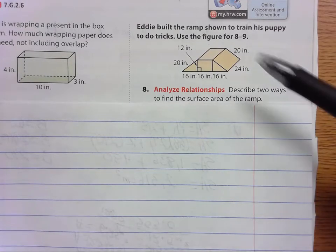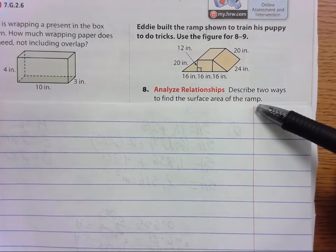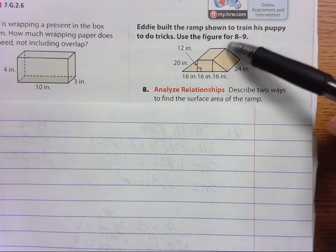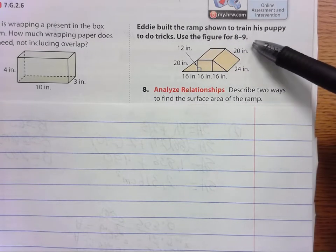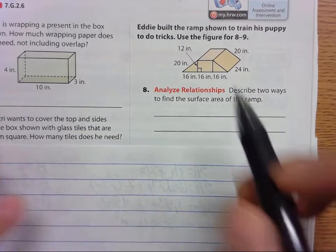Page 121, number 8 and 9. We're going to do both of them. Describe two ways to find the surface area of this ramp. So Eddie built the ramp shown to train his puppy to do tricks. Use the figure for 8 and 9.